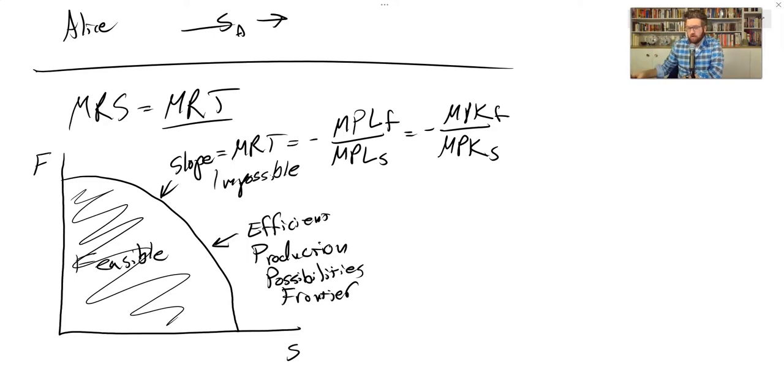So we've already seen from the last video that the marginal rate of substitution is going to be equal to this. How are we going to show the same thing for the market? We need to basically then show that these prices are also equal to the marginal rate of transformation. So how do we do that?